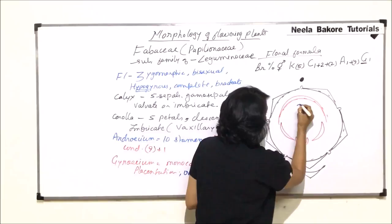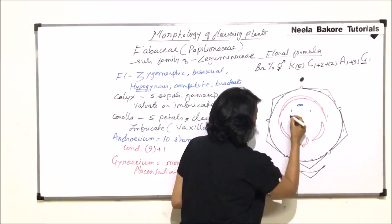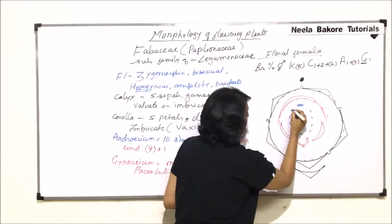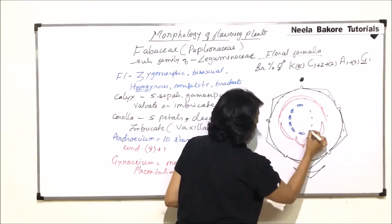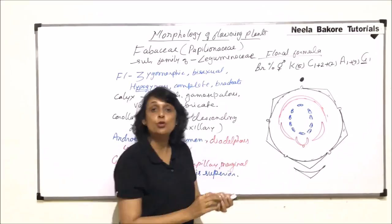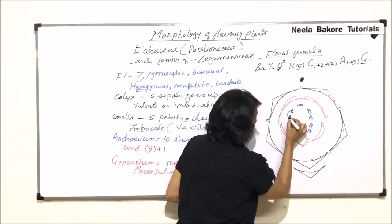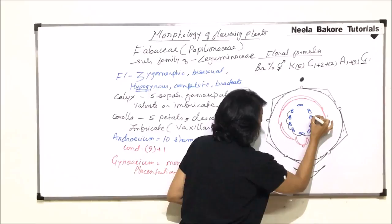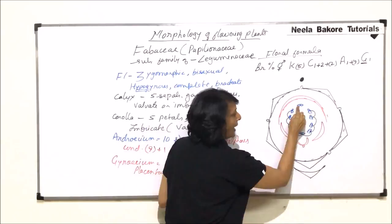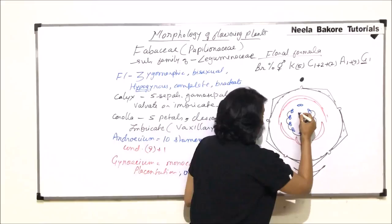Now coming to androecium. We have to show the condition where there is diadelphous condition. One stamen is going to be free, so we draw that single stamen free here. Then we will draw one, two, three, four, five, six, seven, eight and nine. So let us make this one, two, three, four, five, six, seven, eight and nine. And we have to show these nine fused. So what we do is we connect them. So we are connecting these nine stamens to indicate that these nine are fused to form one bundle, and this one is free.